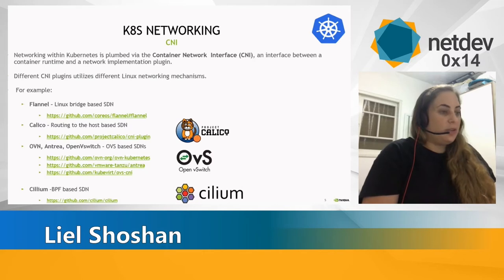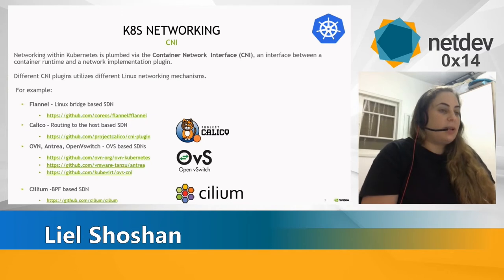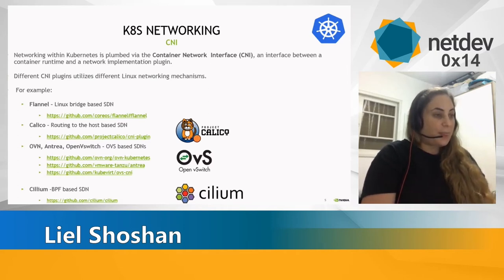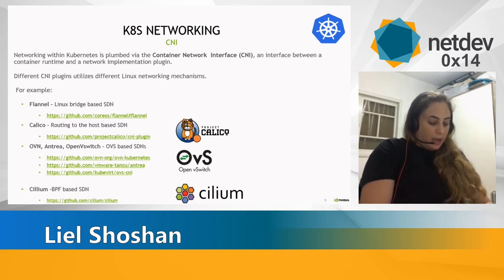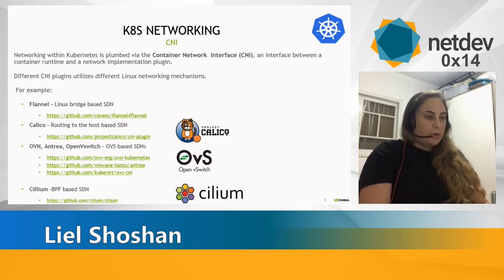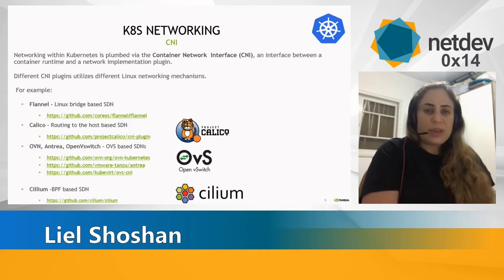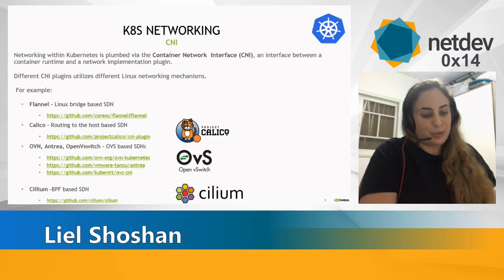Calico, on the other hand, which is based on Linux routing FIB, is also partly dependent on IP tables, and this already has several implementations, also with IPVS and with EBPF. Both are accelerating and boosting the performance, and there can be several other directions.